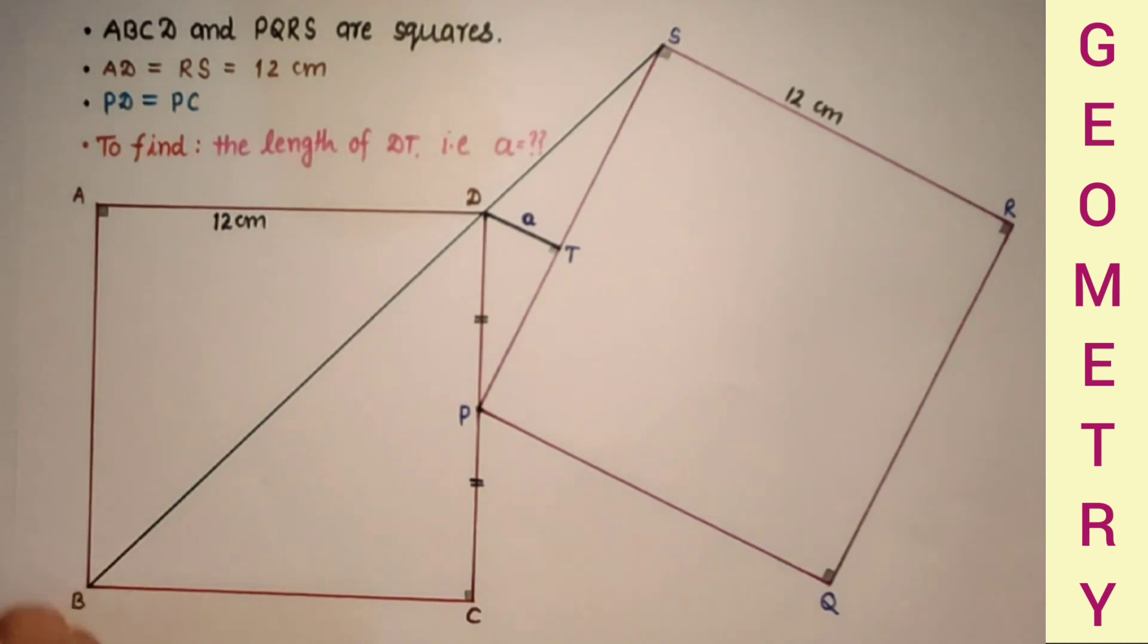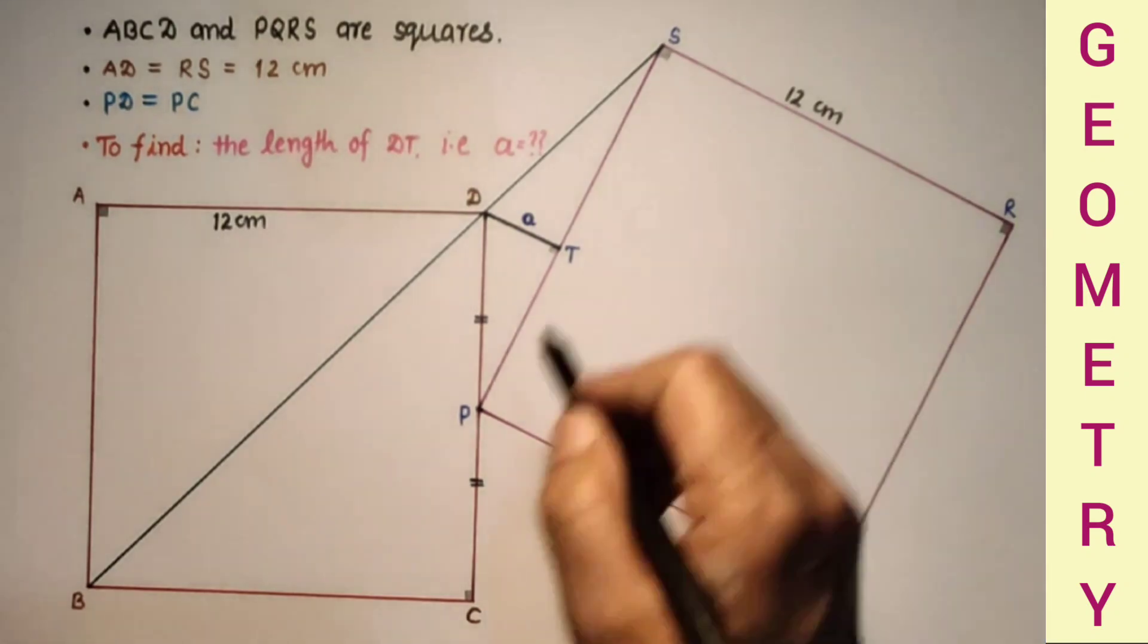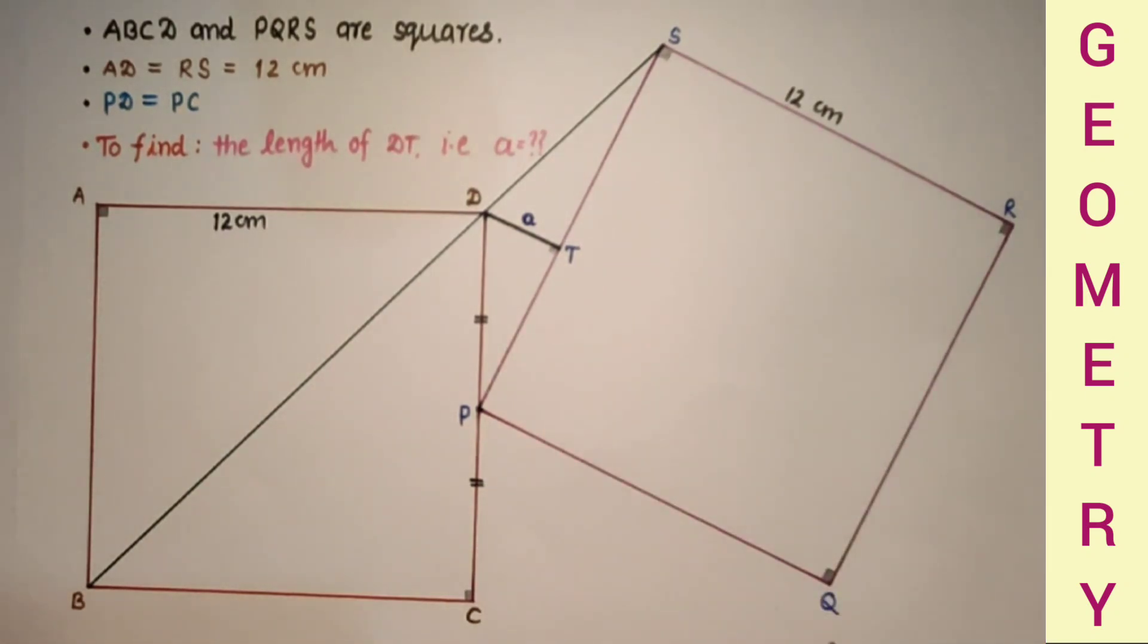The question is ABCD and PQRS are two squares of same side length 12 cm. This P is the midpoint of side DC. And from this point P, PQRS is another square drawn.